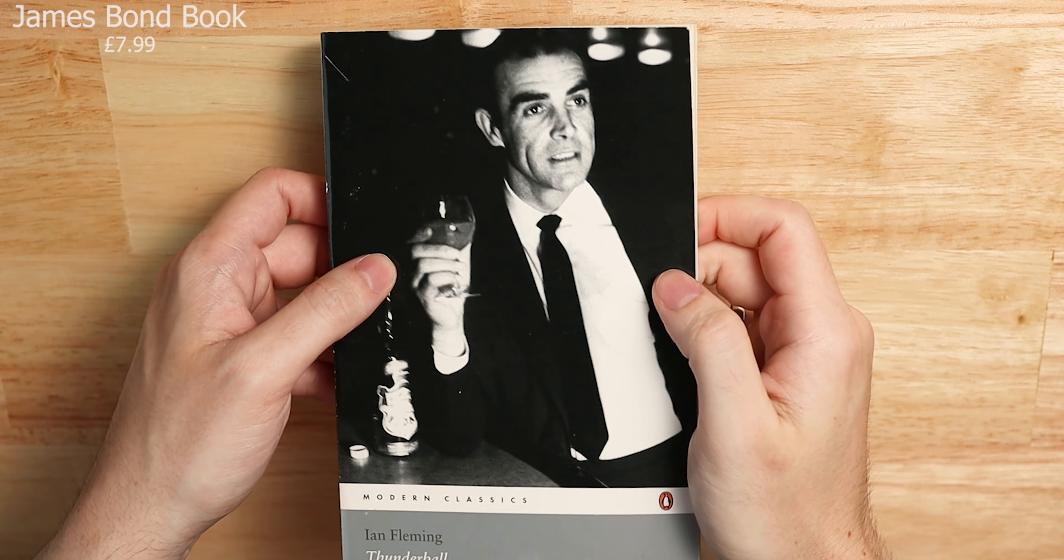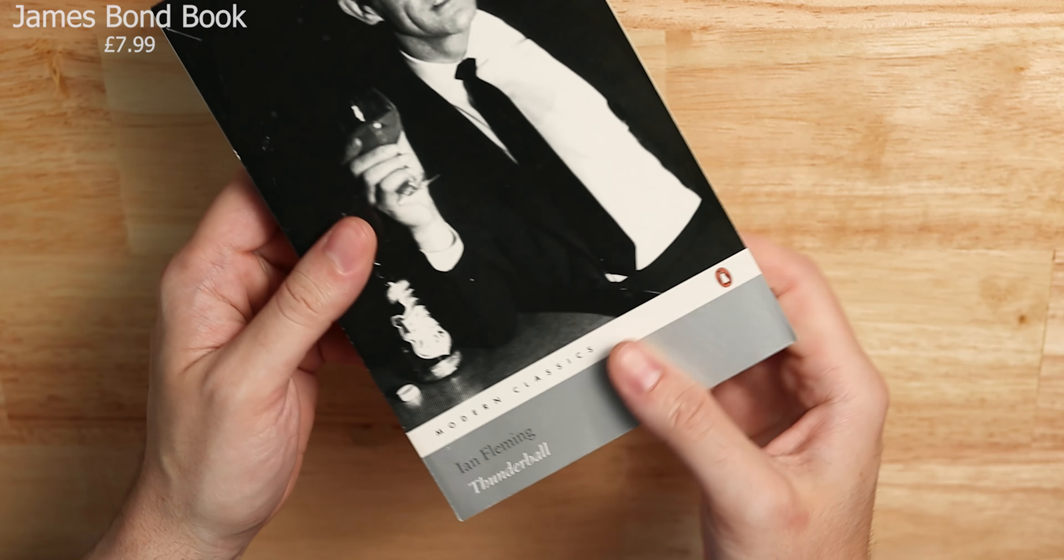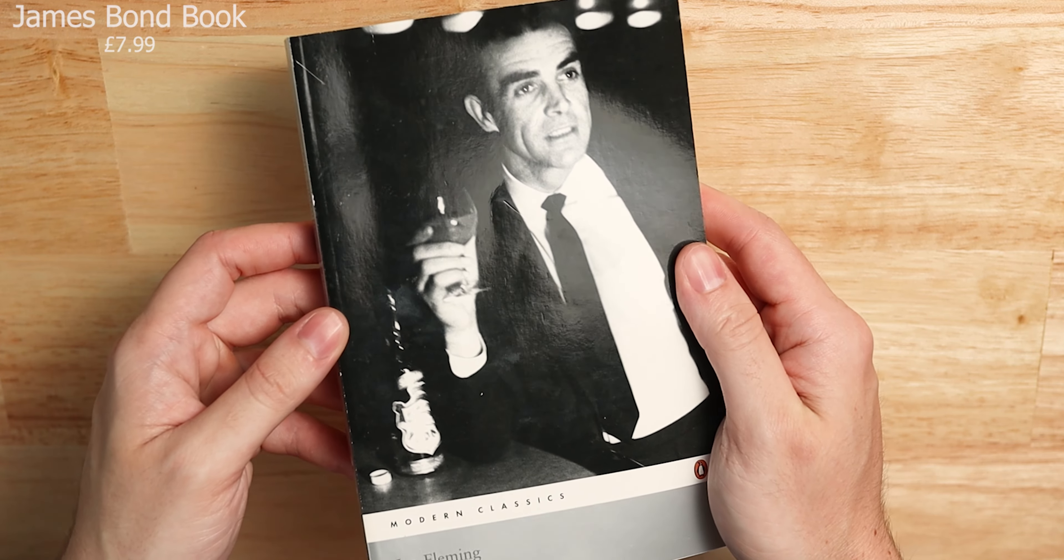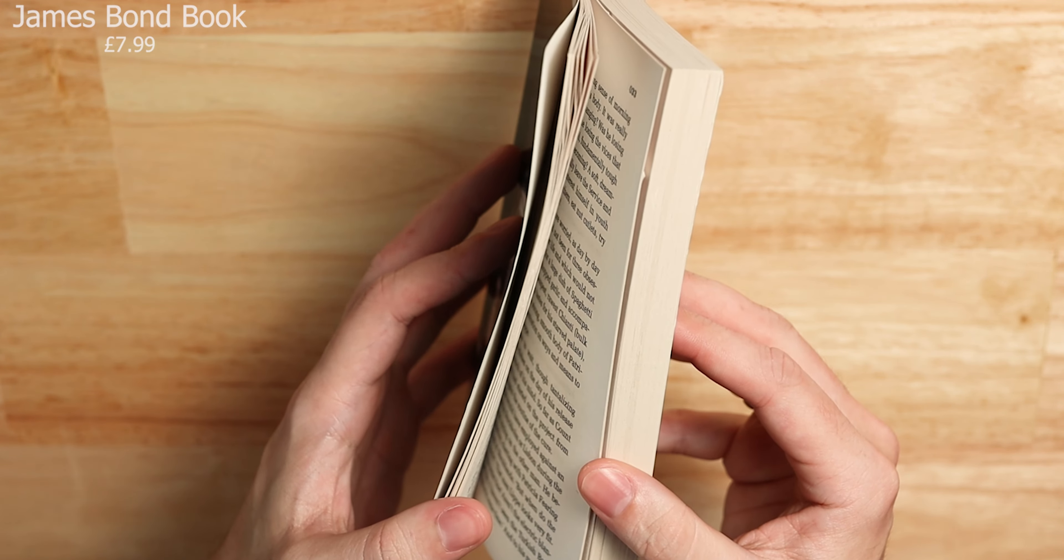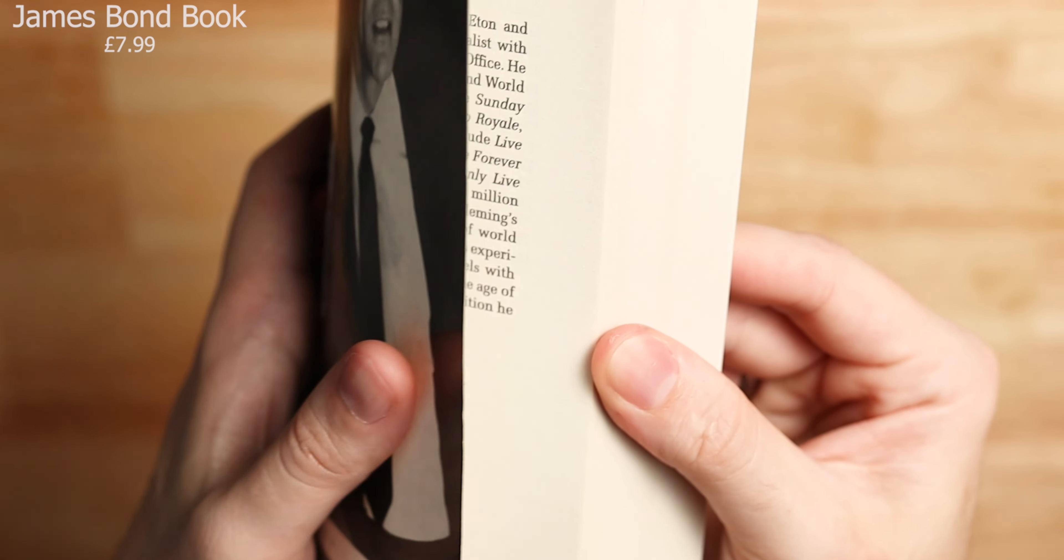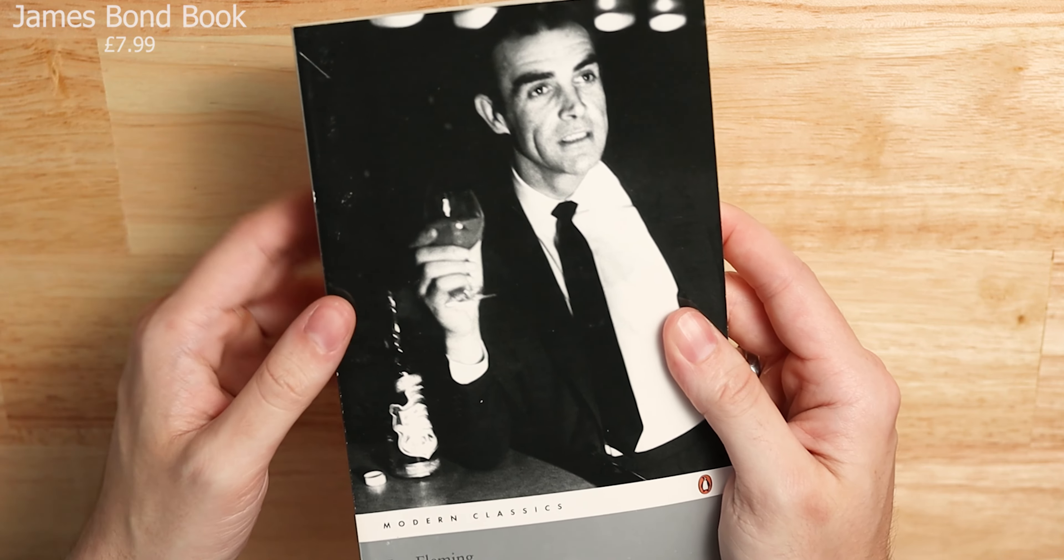The next thing is actually something very simple: Thunderball, a James Bond novel by Ian Fleming. It's just a book. I like reading books when I'm out and about, and this is the current book I'm reading. I'm probably only 30 or 40 pages in, but I'm really enjoying it. I just finished Casino Royale, so moving on to Thunderball now. I love Sean Connery in the film, so I'm hoping to love the book as well.